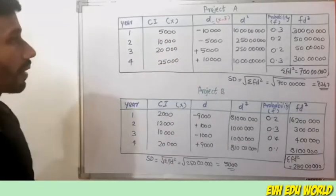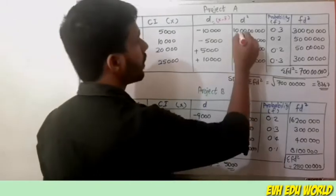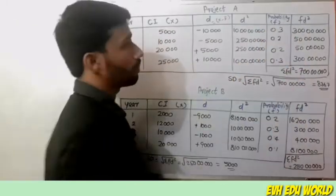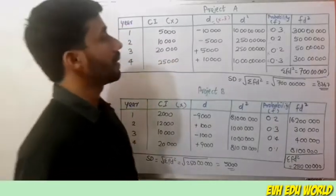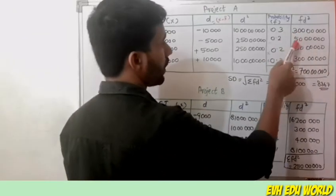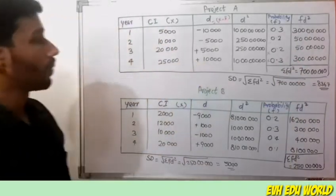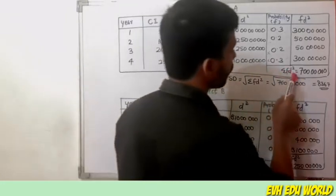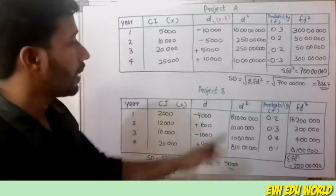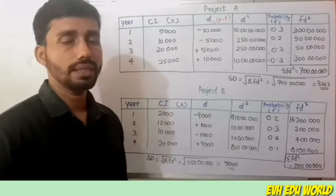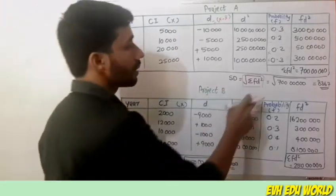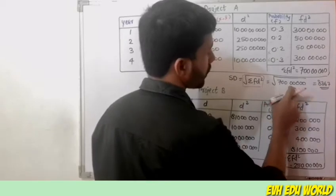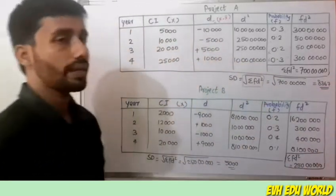We multiply each d² by its probability (f) to get fd². The total sigma fd² = 7 crore. Therefore, Standard Deviation (SD) for Project A = √(sigma fd²) = √(7 crore) = 8,367.